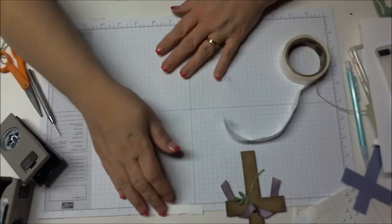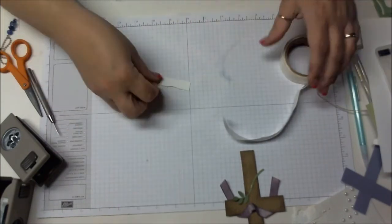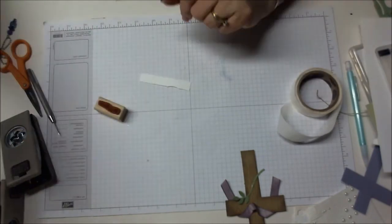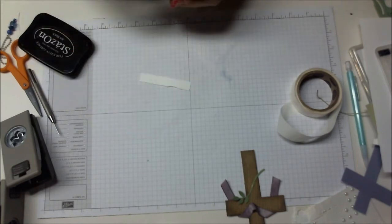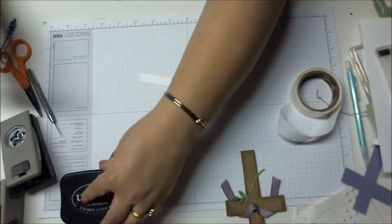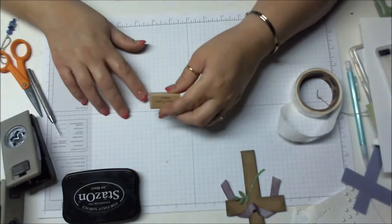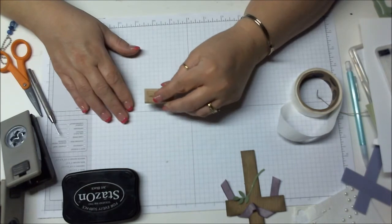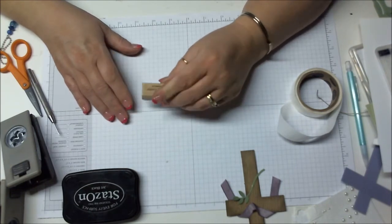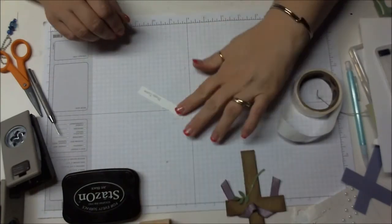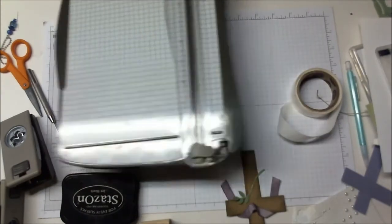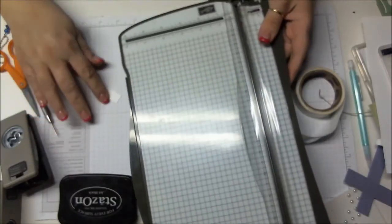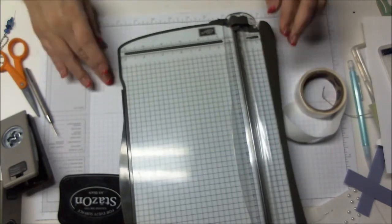Then I have a very tiny piece of paper here. I took some StazOn ink and I have this stamp that says Happy Easter. I stamped it up right on there, Happy Easter. This will probably have to be trimmed a little bit because I want to make it look like a tag.